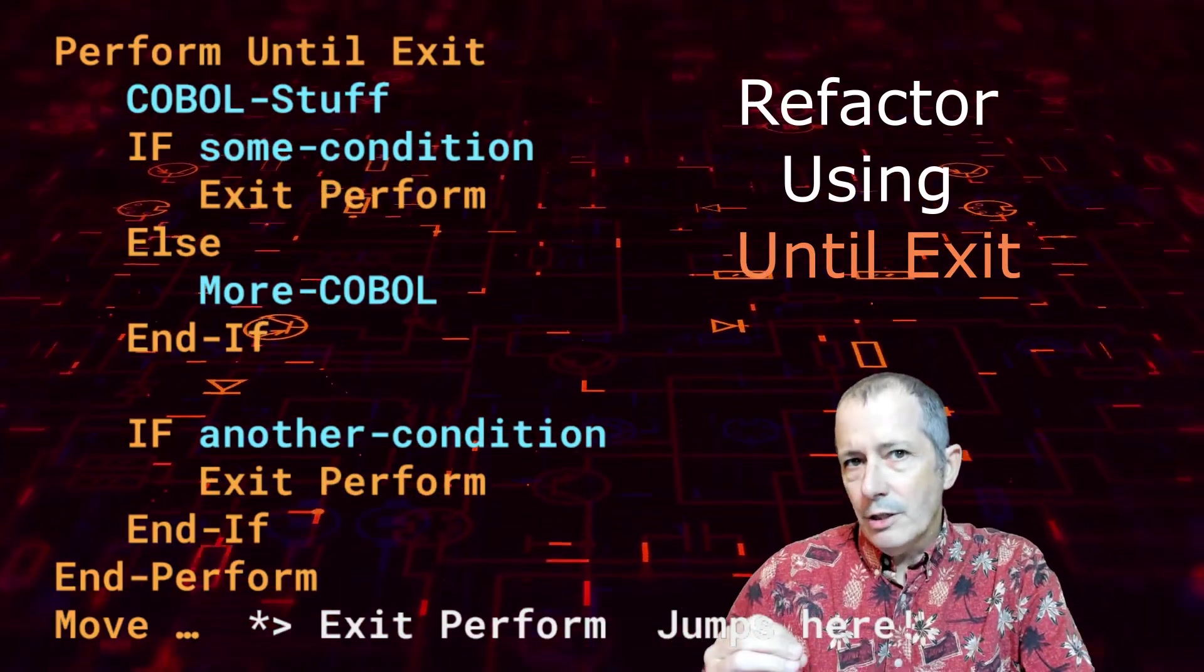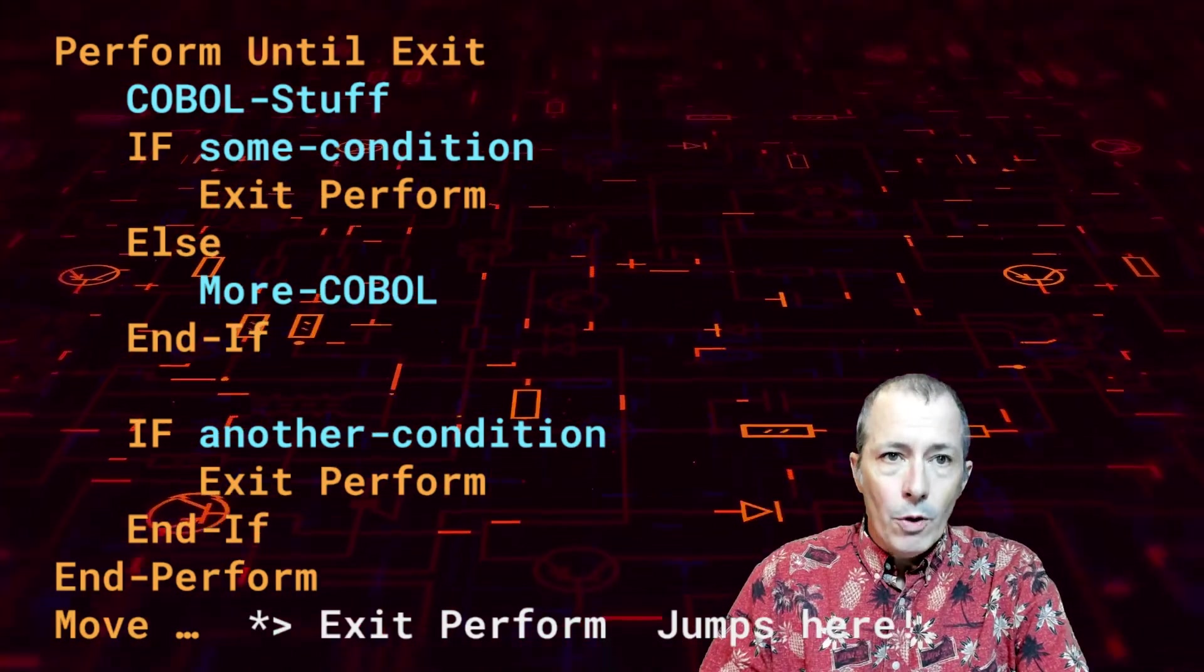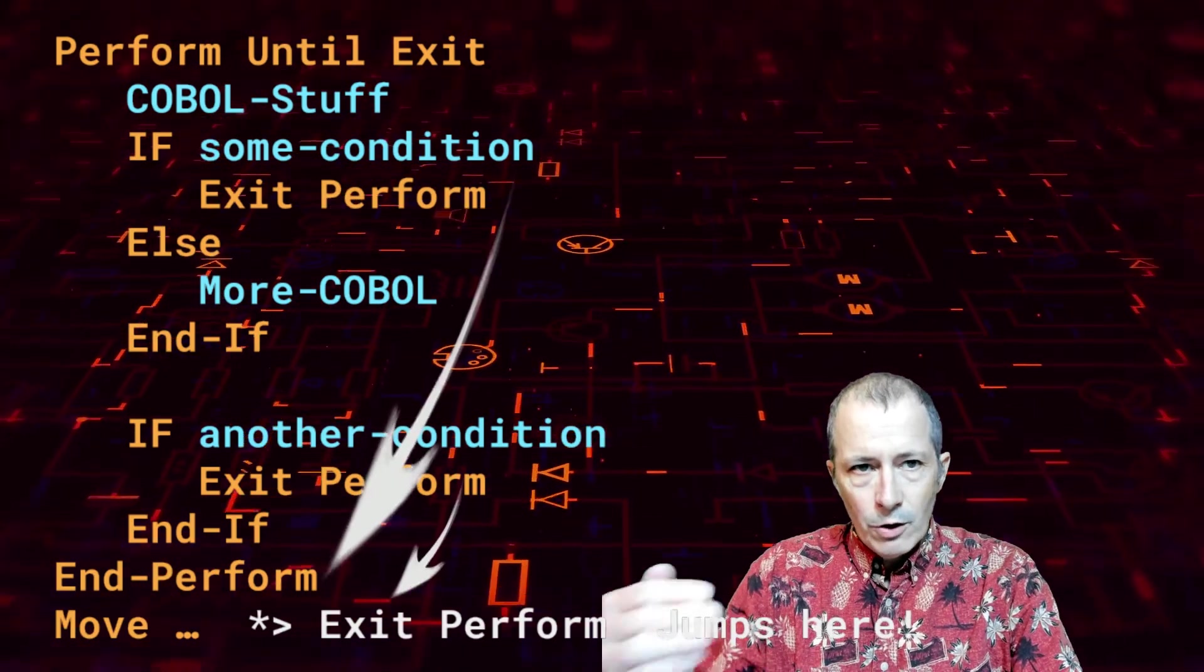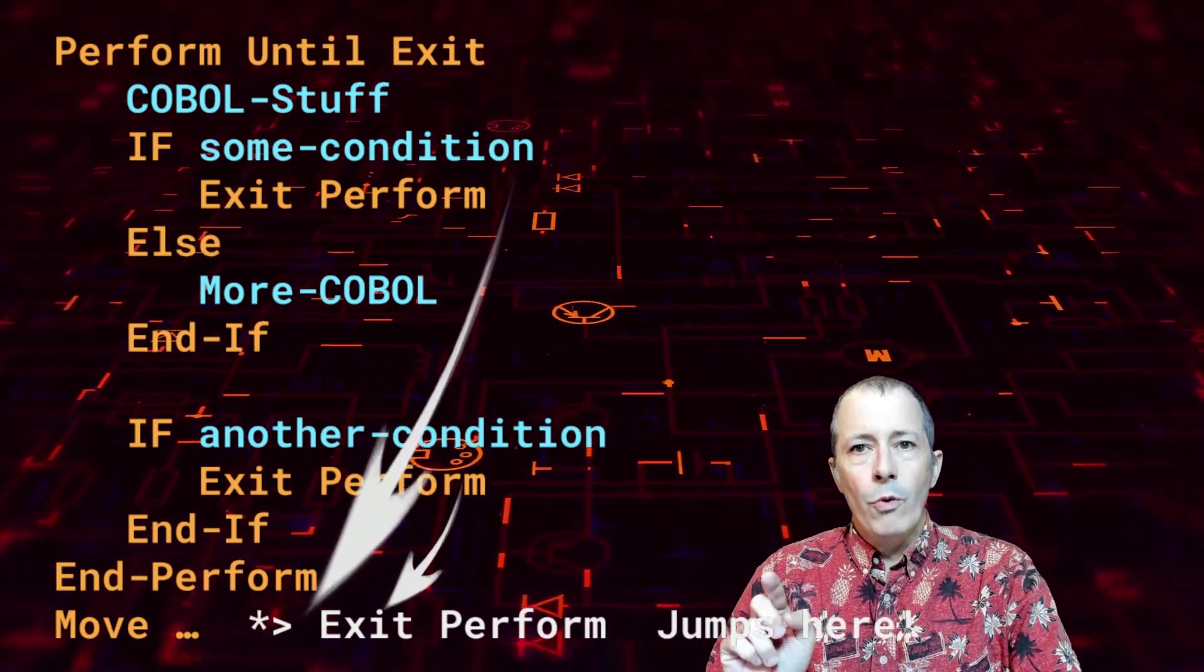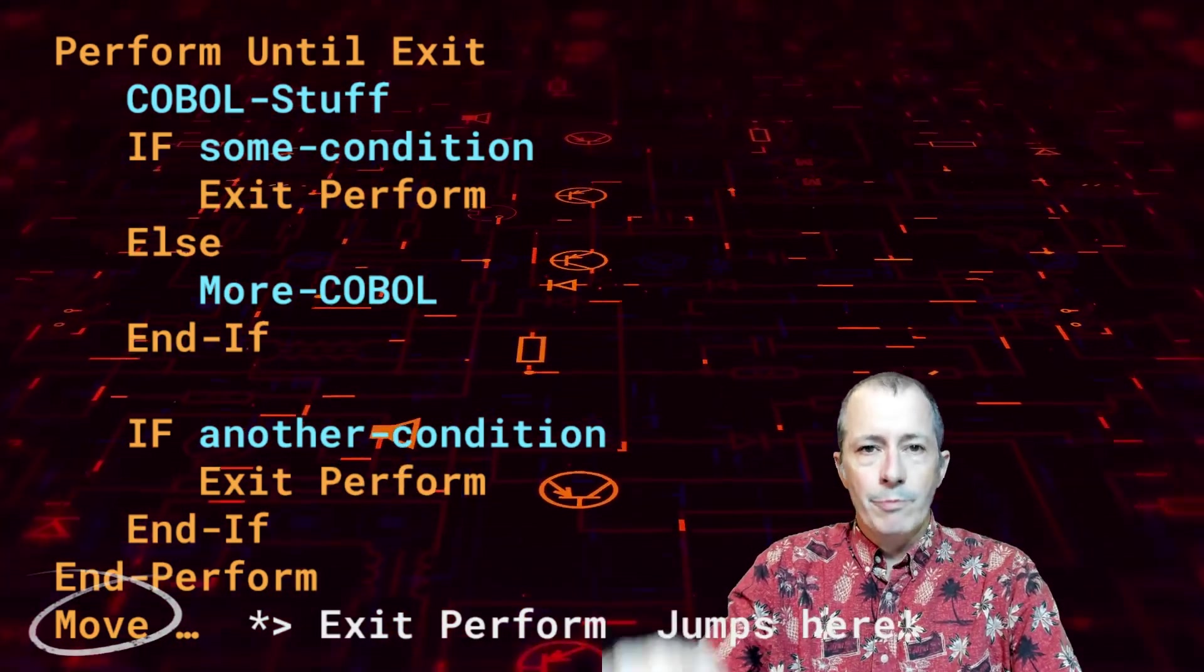The logic gets a bit cleaner when using perform until exit and exit perform. Now, when either of the conditions to leave the loop is triggered, the exit perform passes control to the move statement after the end perform.